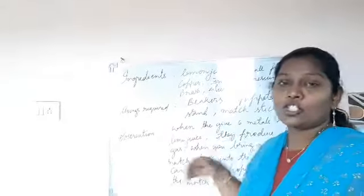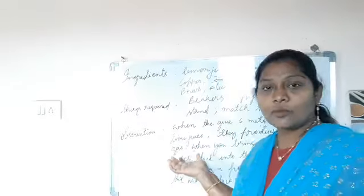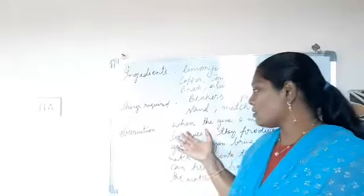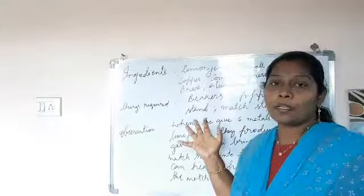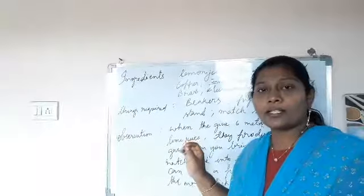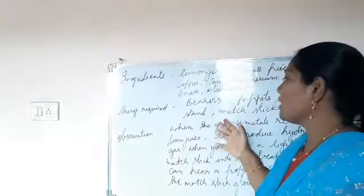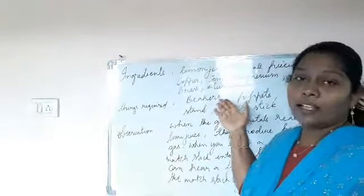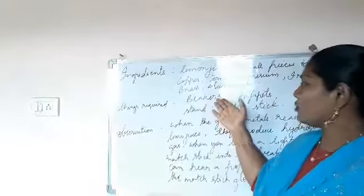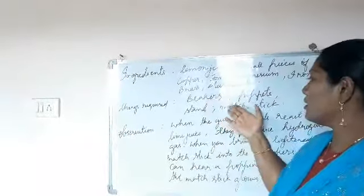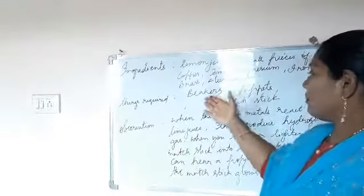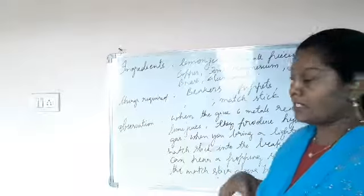Now, the things required. To conduct any experiment, we need a few things in advance so that we can carry out the experiment with exact and accurate results. What are the things required? We have to have six beakers, pipettes, and matchsticks.